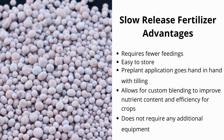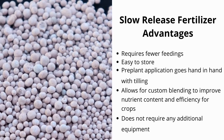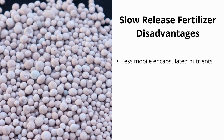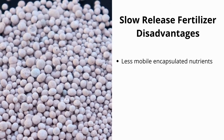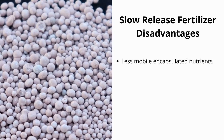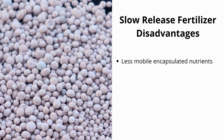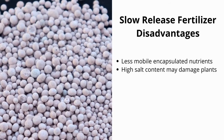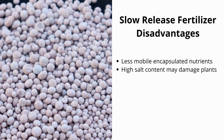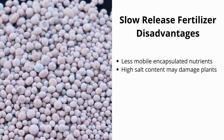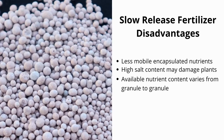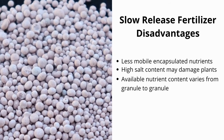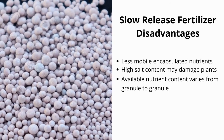The major disadvantages of using slow-release fertilizer include: less mobile encapsulated nutrients, especially phosphorus, may not reach plant roots; high salt content can burn roots or repel them from the nutrient content; and while liquid fertilizer contains consistent nutrient levels throughout, the available nutrient content varies from granule to granule in slow-release granular fertilizer.